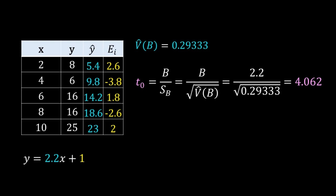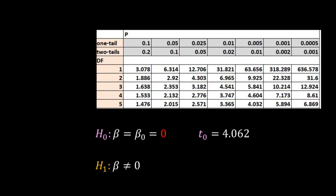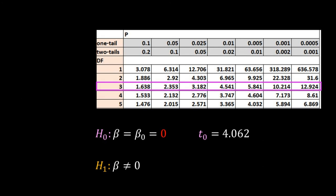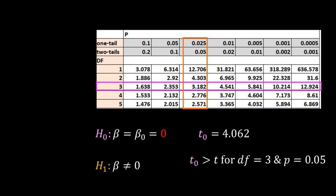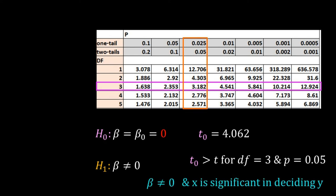Now I compare this t-value with the critical t-value. We perform the t-test using a t-table. We have five data points, so the degrees of freedom for this regression is 5 minus 2 = 3. Following the row for degrees of freedom 3, our t-statistic of 4.062 is bigger than 3.182 but smaller than 4.541. The p-value for t = 3.182 is 0.05 in a two-sided test. Since our t-statistic is bigger than the critical t-value for p = 0.05, we reject the null hypothesis. Therefore the real beta is not zero — that means x significantly affects y.